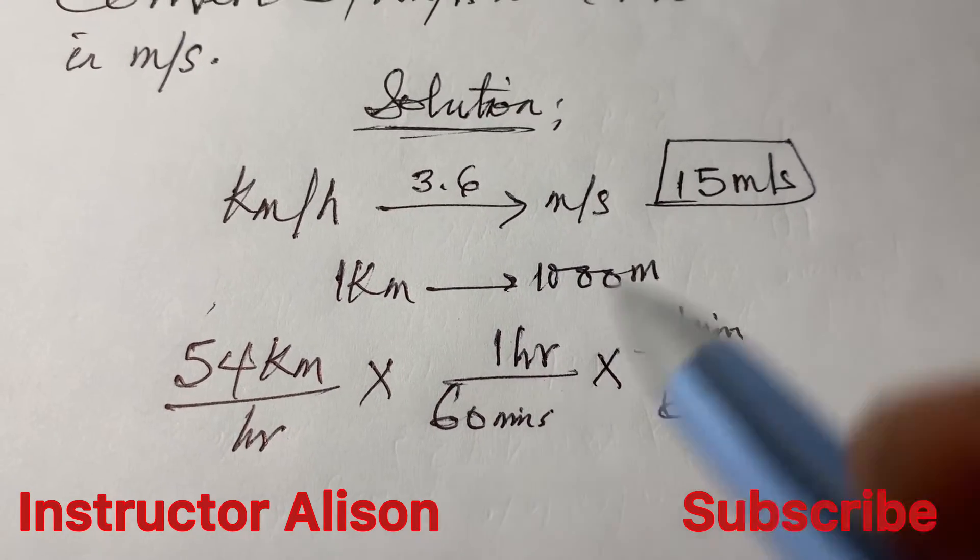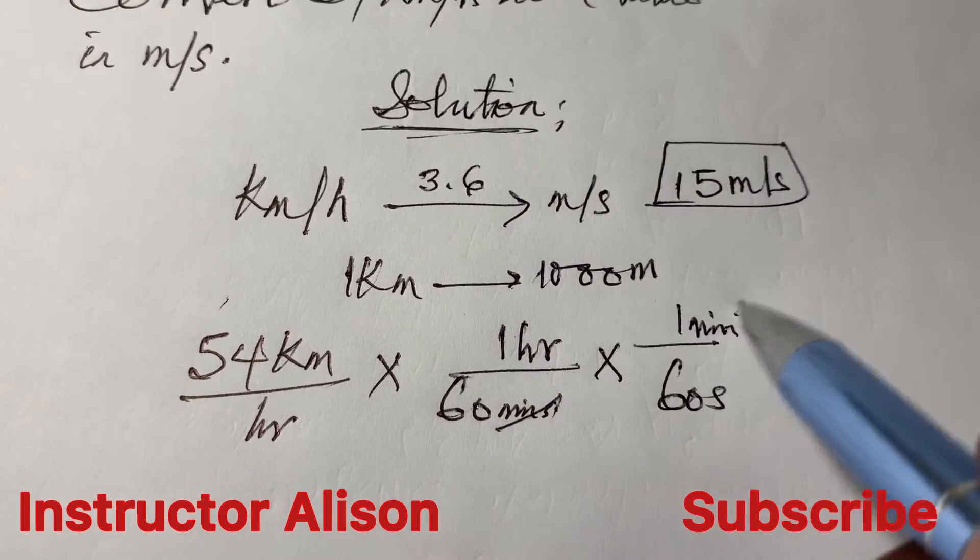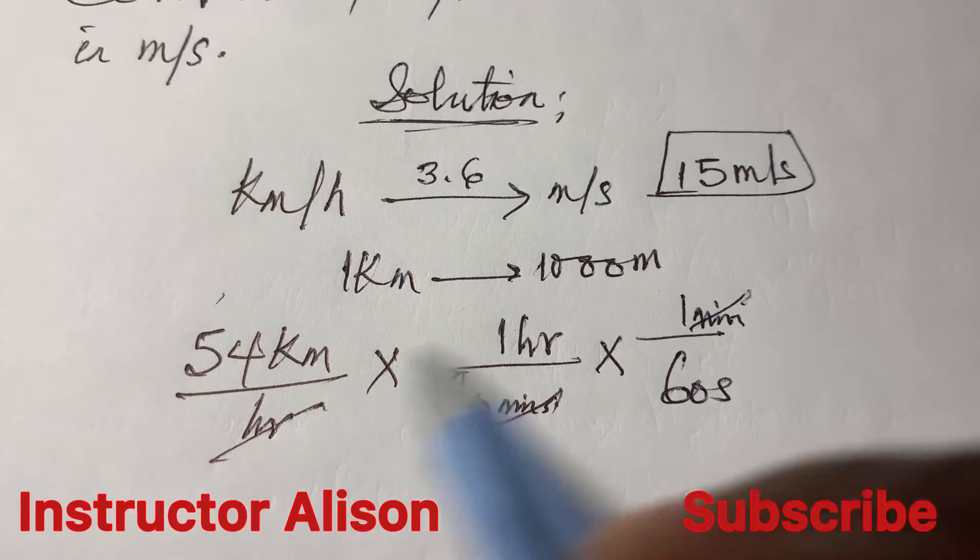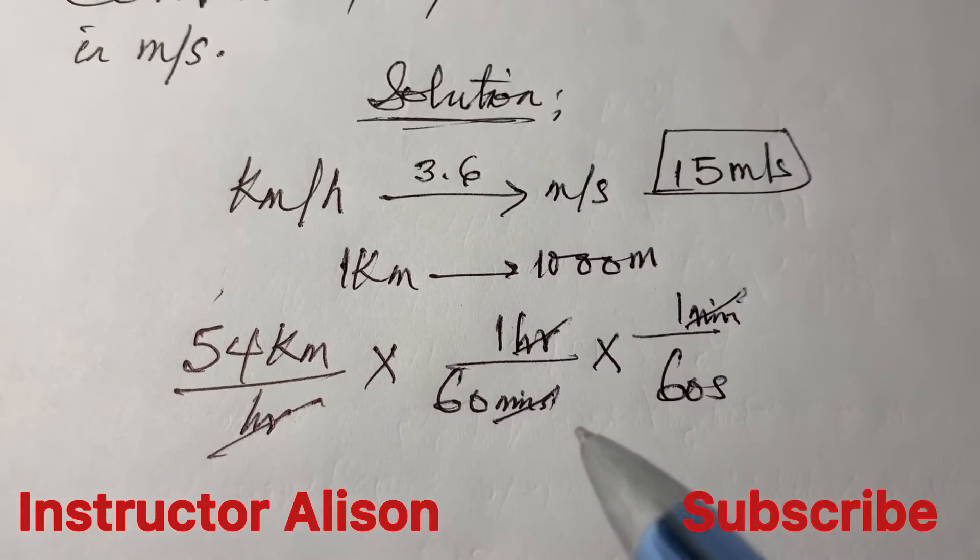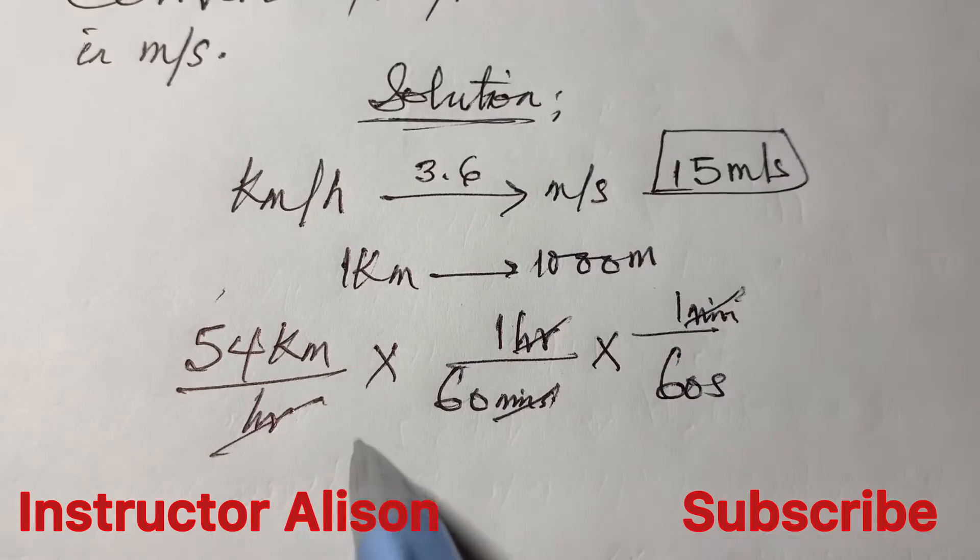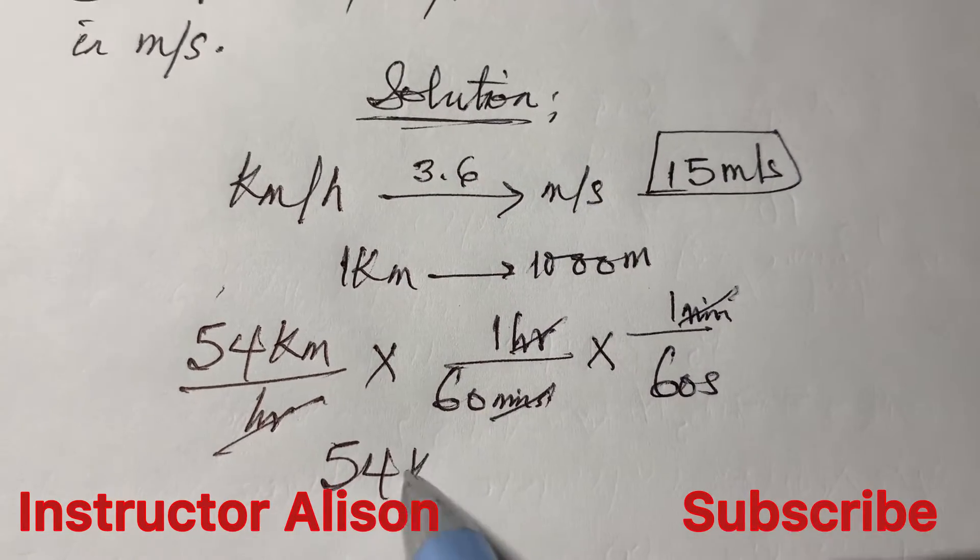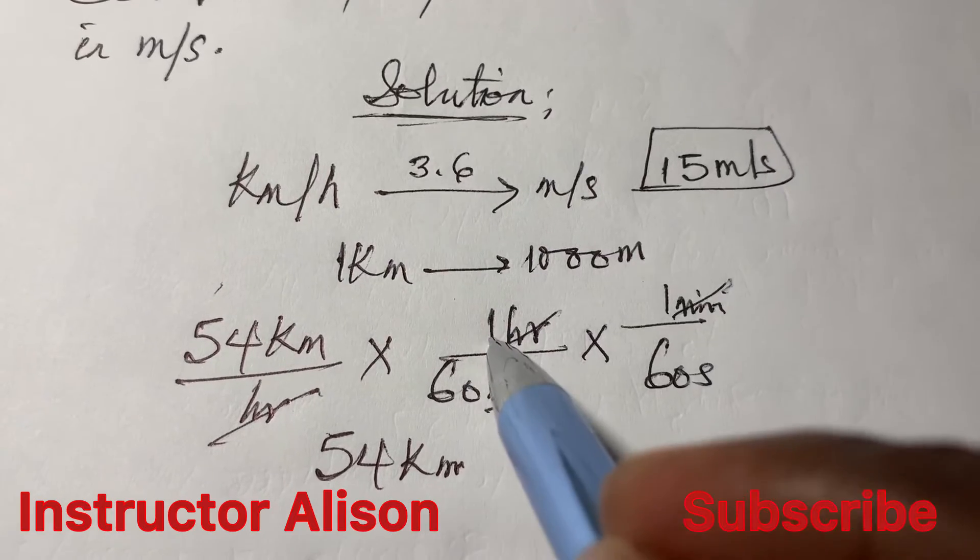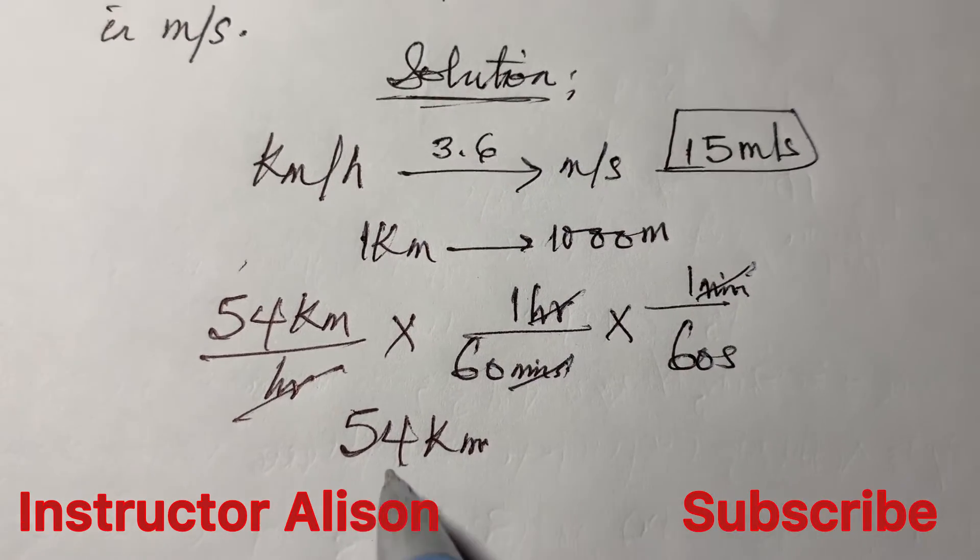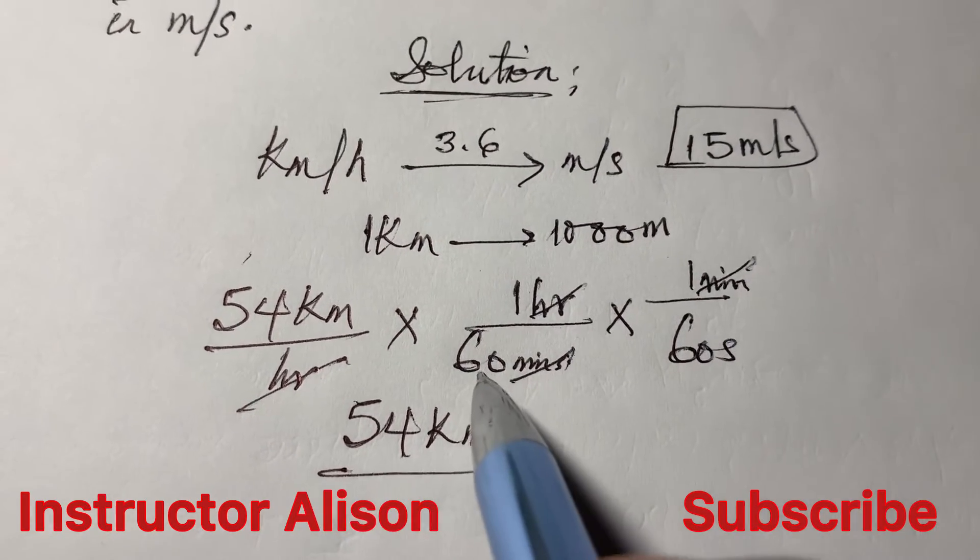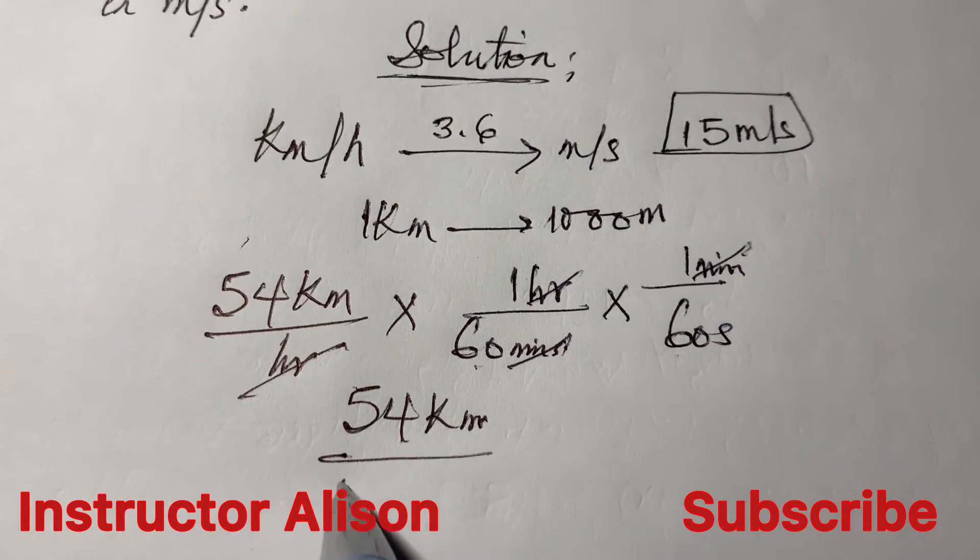So what do we need to do? This minute cancels out with this minute, this hour cancels out with this hour. So on the numerator we're having 54 kilometer times one times one, that's 54. This divided by 60 times 60 gives you 3600 and remember it is in seconds.